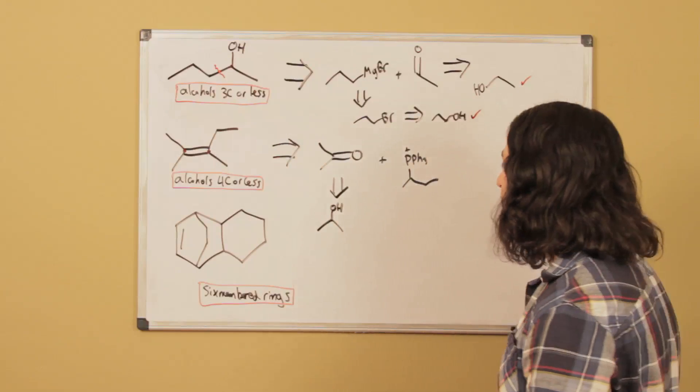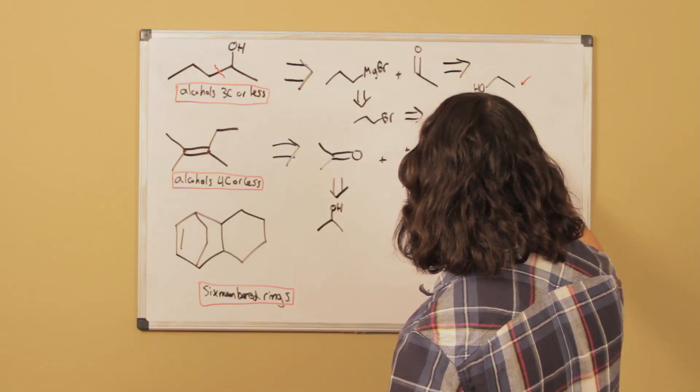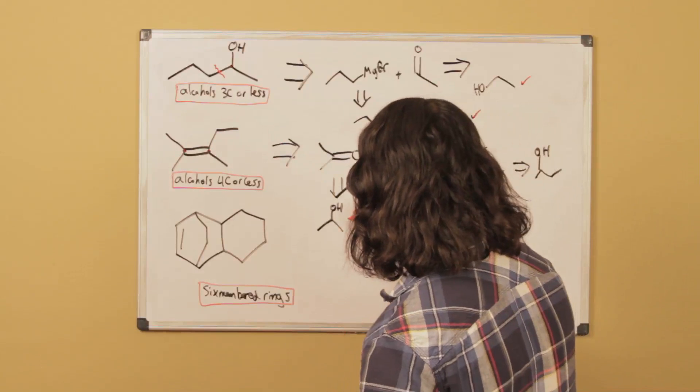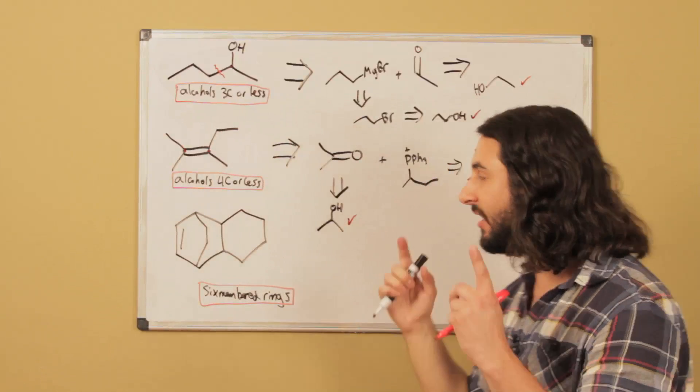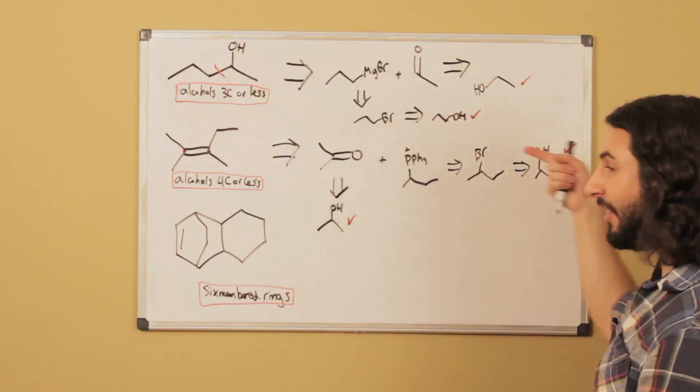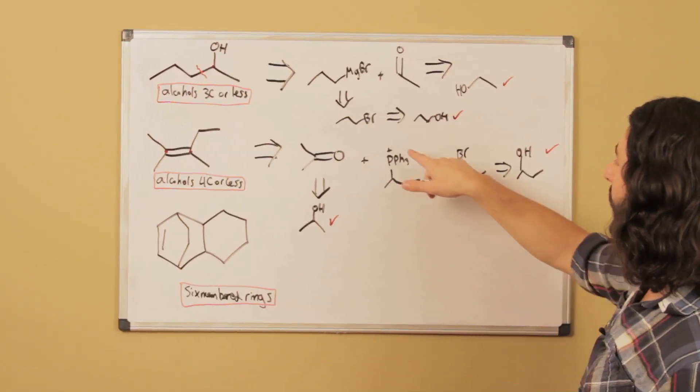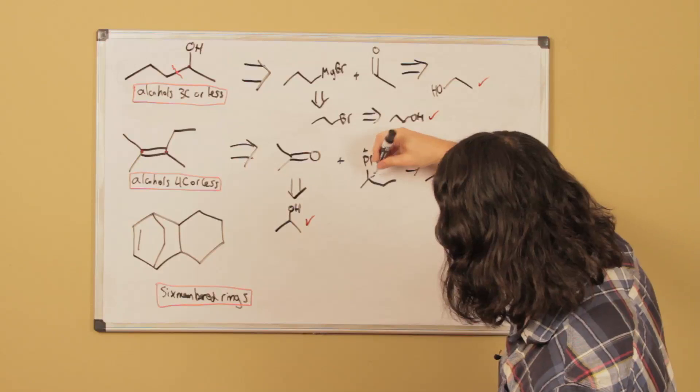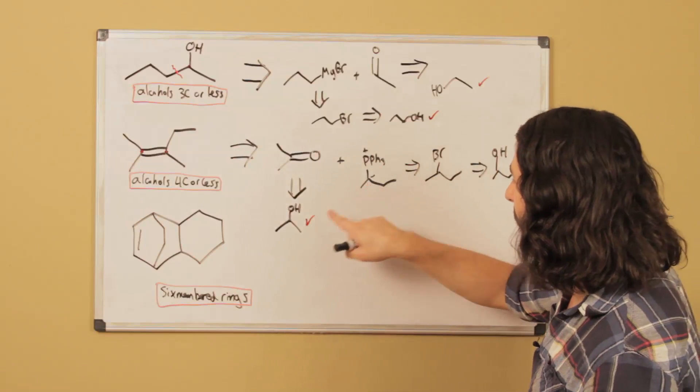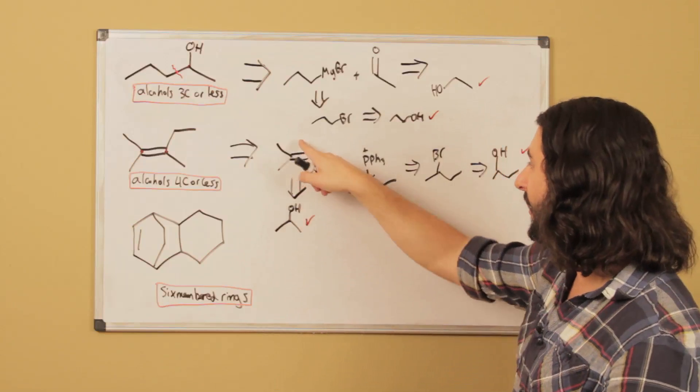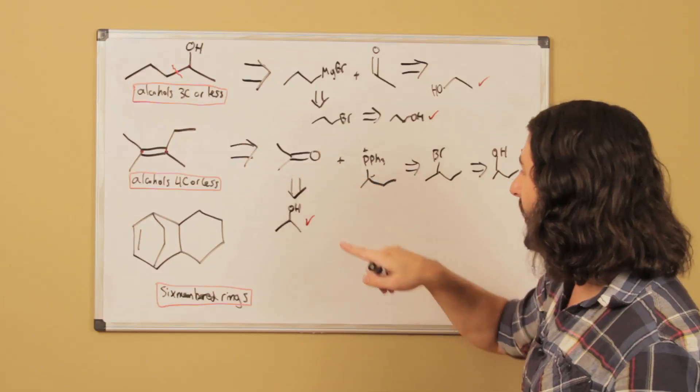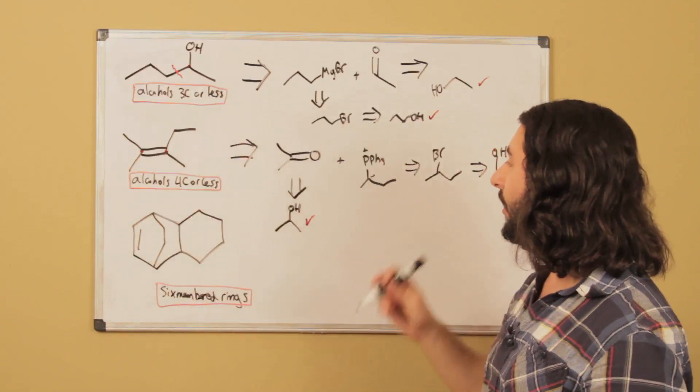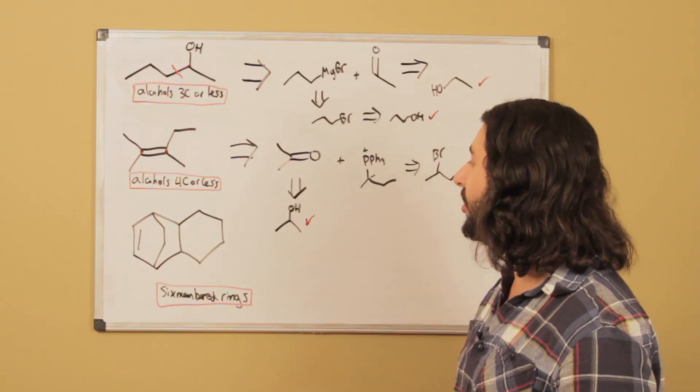Over here, this could have come from an alkyl bromide, which could have come from an alcohol. We have met the criteria—these are both alcohols of four carbons or less. To double-check in the forward direction: if we react with PBr3, we get the alkyl bromide; with triphenylphosphine and base, we get the Wittig reagent with a negative charge. If we oxidize with PCC or KMnO4, we get the ketone. If this ketone and Wittig reagent react, we get this alkene product. This is once again a valid retrosynthetic strategy.